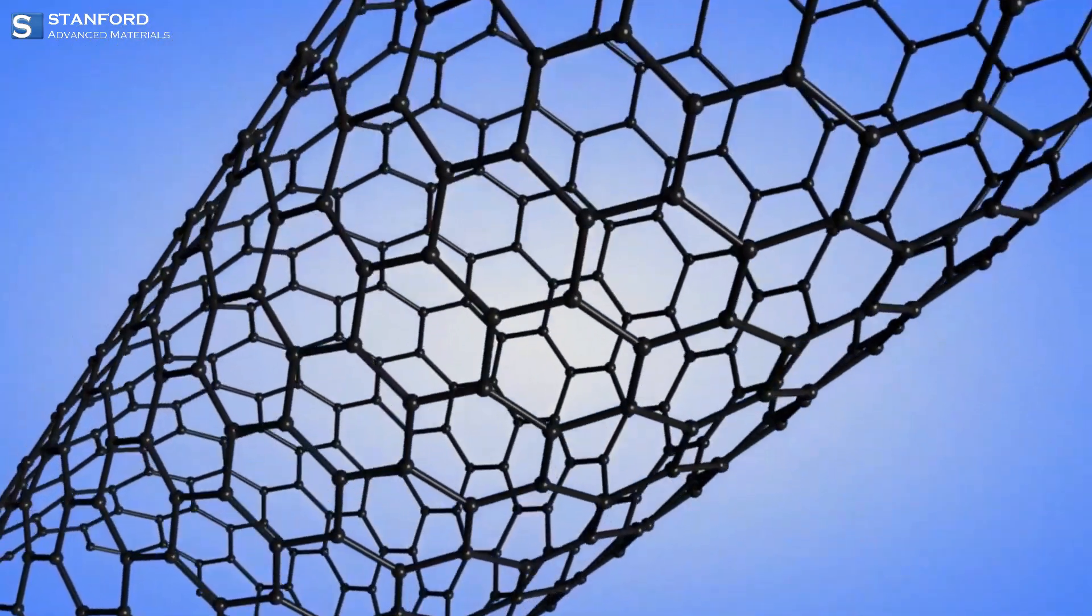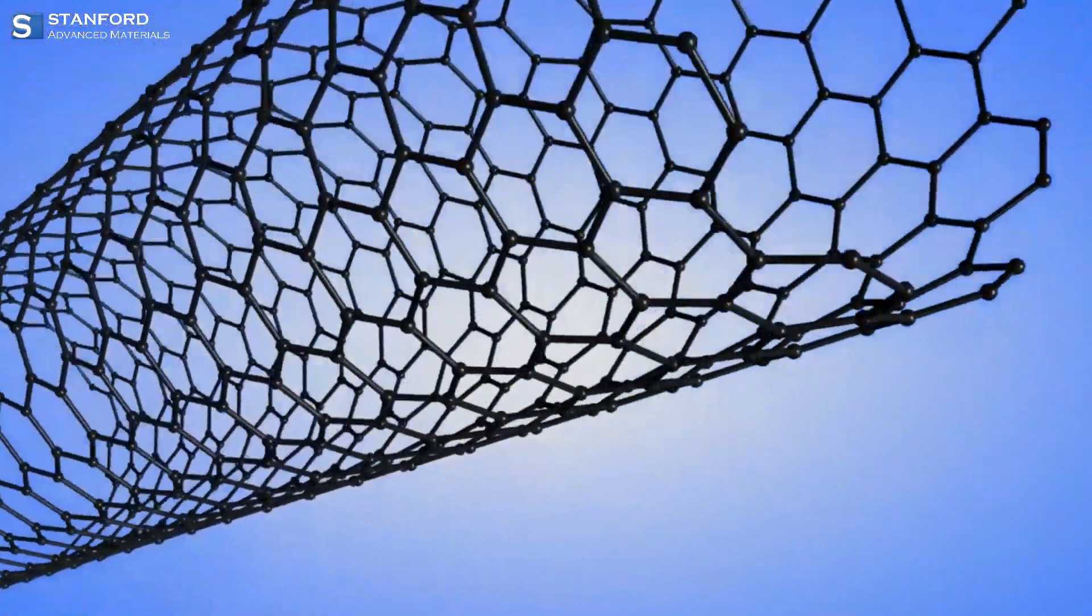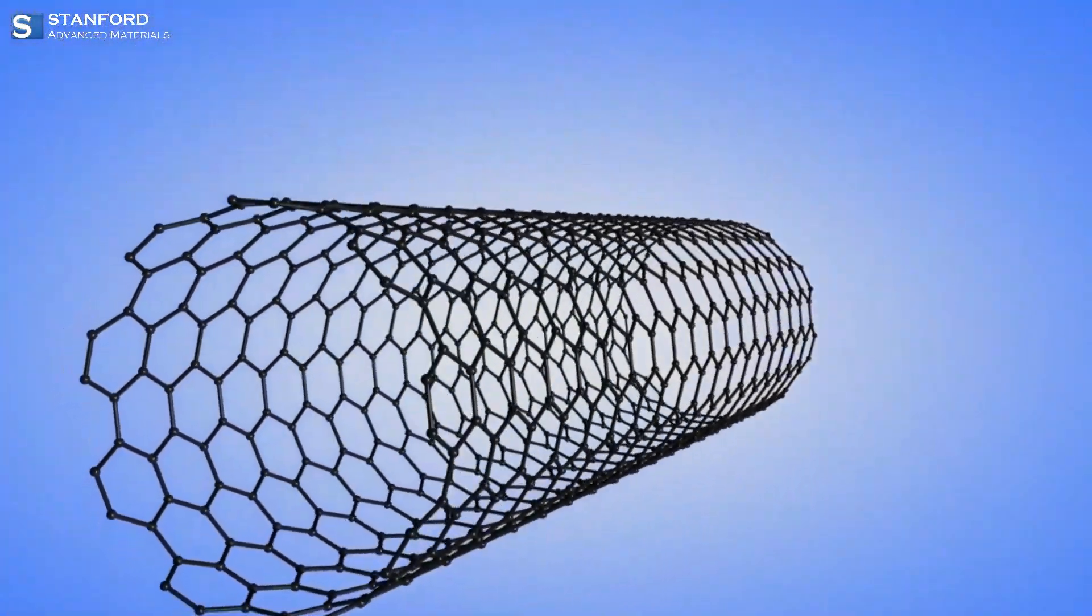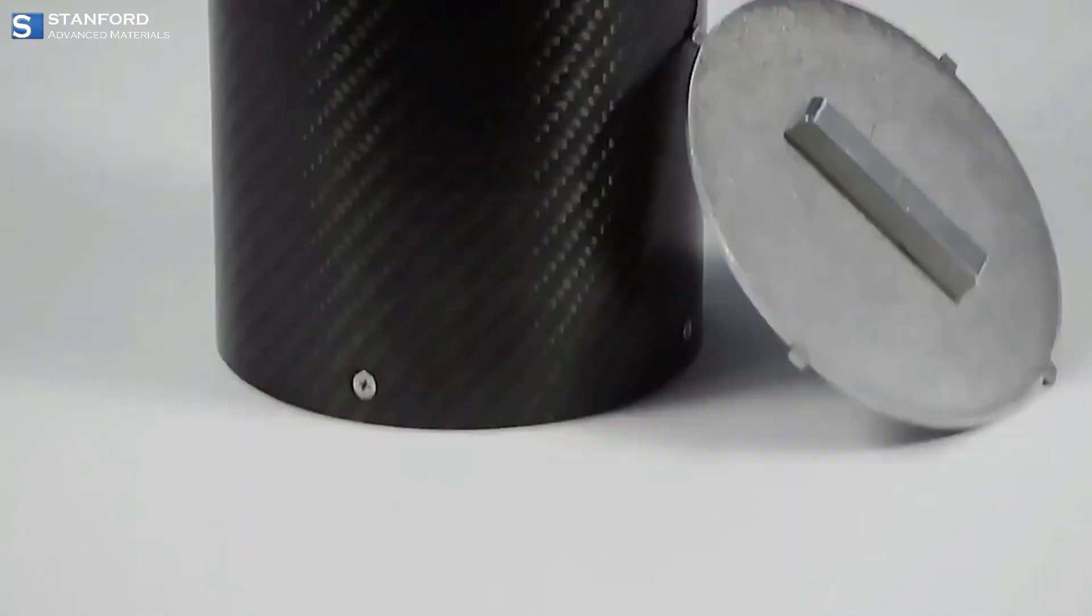Carbon fiber is a composite material, composed of thin crystalline strands of carbon. Its composition, though seemingly simple, gives rise to a substance with remarkable properties.